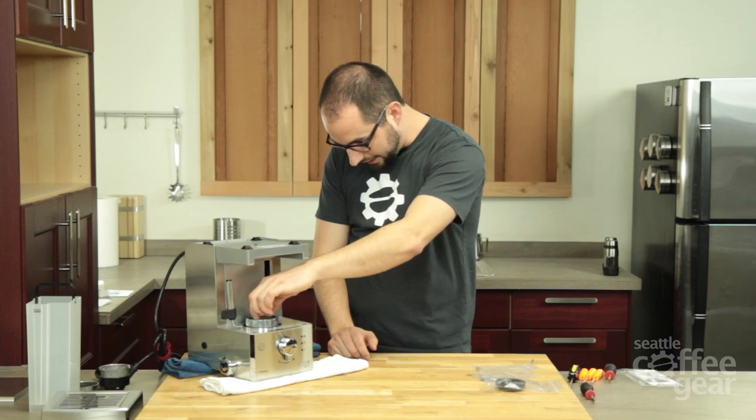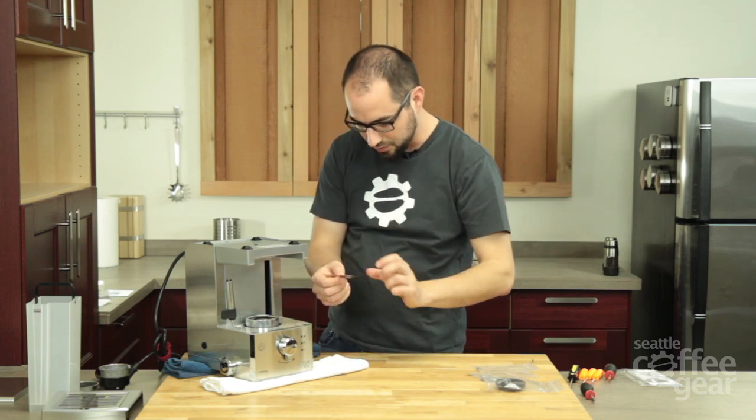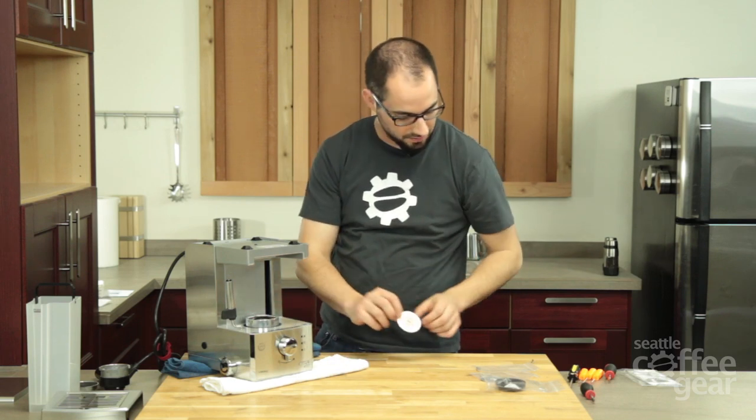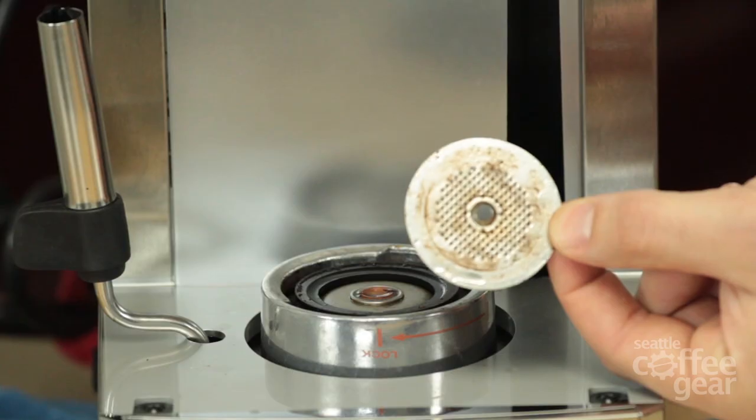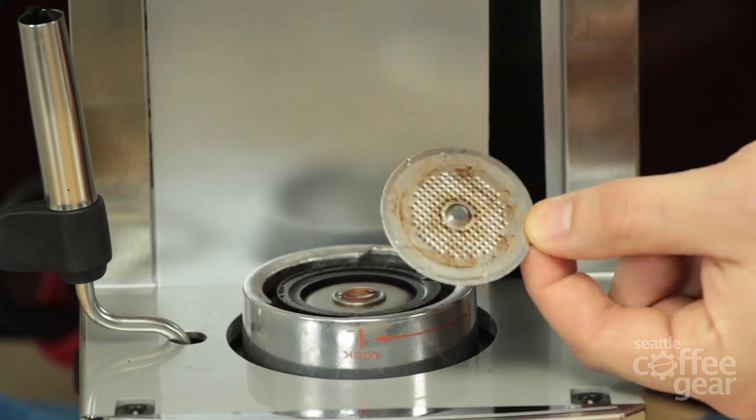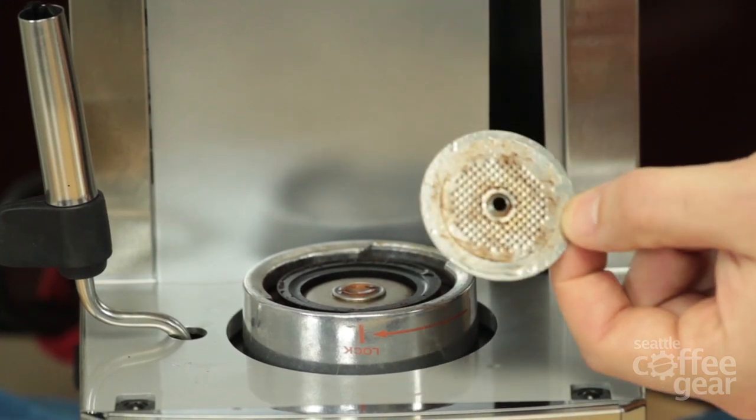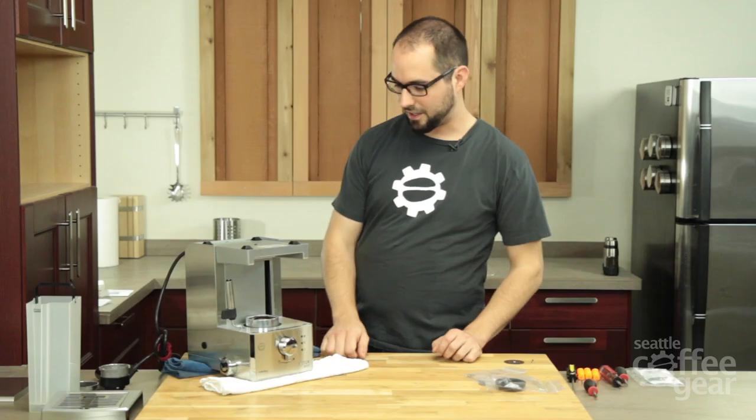Some people like to soak these and then have two screens on hand, which you can totally do. As you can see, this is the machine out of our showroom. You know, this screen is pretty gunky and it's in need of a new one.